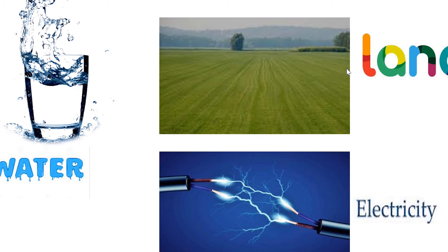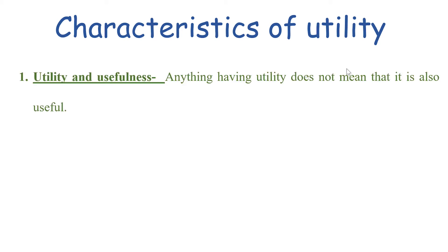Now let us see some of the important characteristics of utility. The first characteristic is utility and usefulness. By utility we mean the want-satisfying power of a commodity, while by usefulness we mean the benefit obtained from a commodity. A commodity that is useful will also possess some utility, but a commodity that possesses utility may not always be useful.